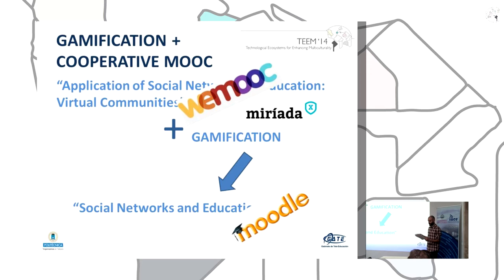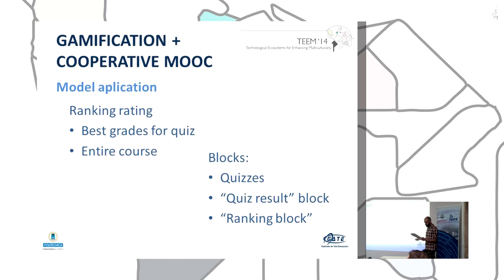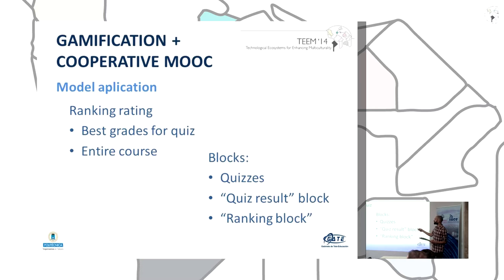The new version is installed on a platform based on Moodle, whereas the previous version was on the MediaLitex platform based on WeMOOC. To enhance the Moodle platform, we install additional modules. We propose the following gamification elements: the first is a ranking rating with two different rankings — a ranking of the best grades for each activity, and a ranking of the entire course — implemented using Moodle quiz result blocks and ranking blocks.